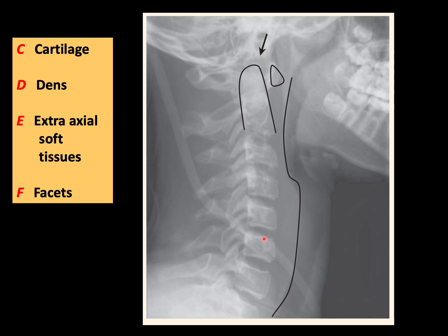Then C represents cartilage — the disc spaces or disc heights. D is for the dens, which is the odontoid process of C2. E stands for extra-axial soft tissue, which is very important in trauma and also in retropharyngeal abscess. At the level of C3 it is roughly 7 millimeters, and at the level of C7 it is 3 centimeters — remember: seven, three.